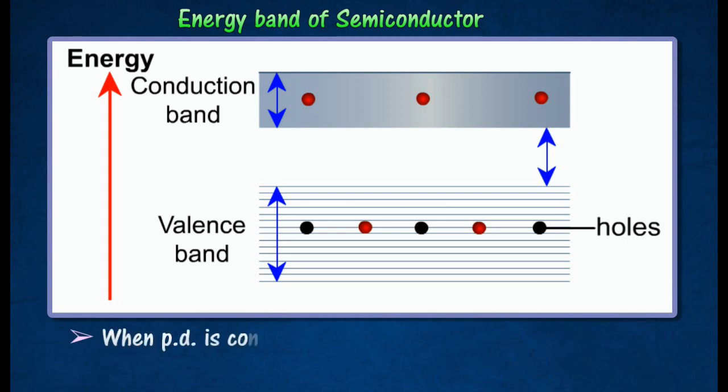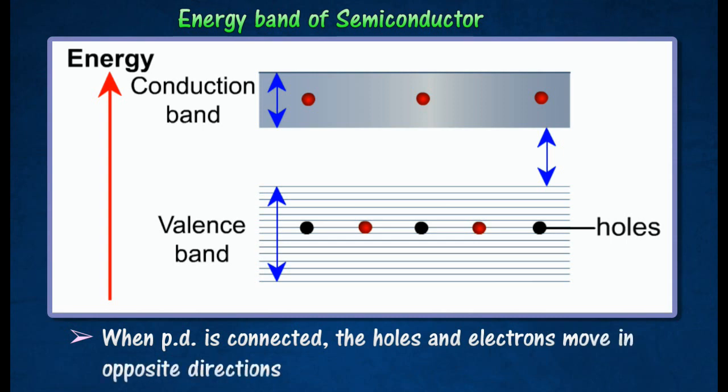When a potential difference is connected across a semiconductor, the holes and electrons move in opposite directions. Thus, both charge carriers contribute to the current that flows.